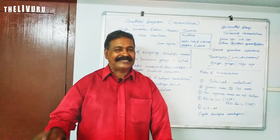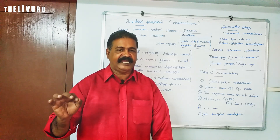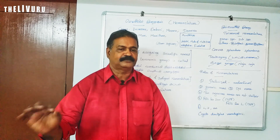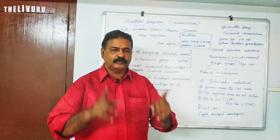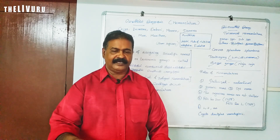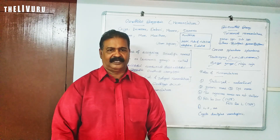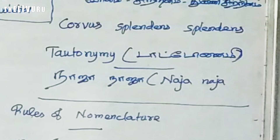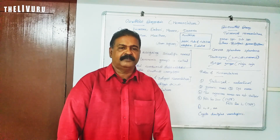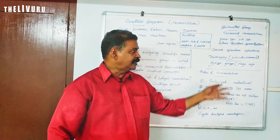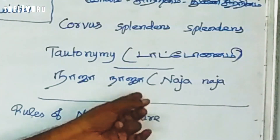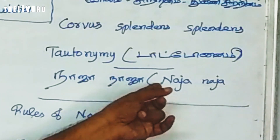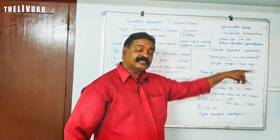The practice of using the same name for both genus and species is called tautonymy. For example, the cobra's scientific name is Naja naja — the genus name and species name are the same. This is how you identify tautonymy. The first letter of the genus name should be a capital letter, and the first letter of the species name should be a small letter. So in Naja naja, the genus 'Naja' has a capital N, and the species 'naja' has a lowercase n.